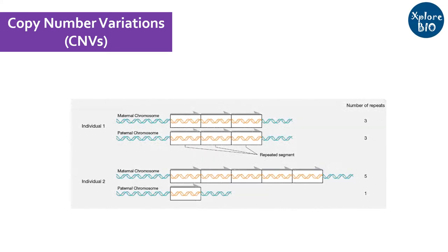Copy number variation, or CNV, is one of the major causes of structural variation in the genome, in which the number of copies of a particular genome segment gets duplicated or deleted. These copy number variations can technically range between 1000 bases to 5 megabases, but most CNVs are less than 10kb long.